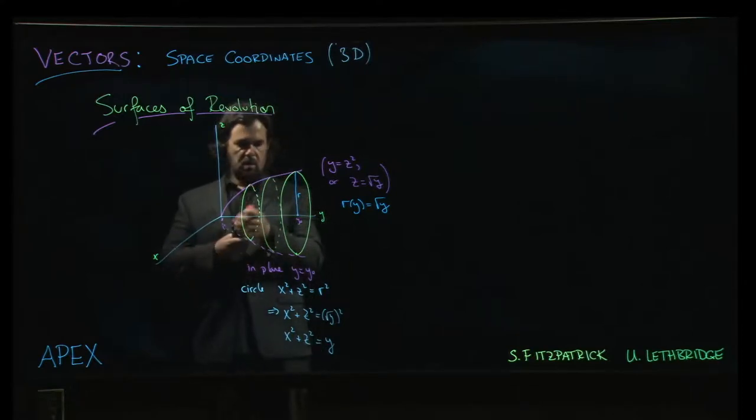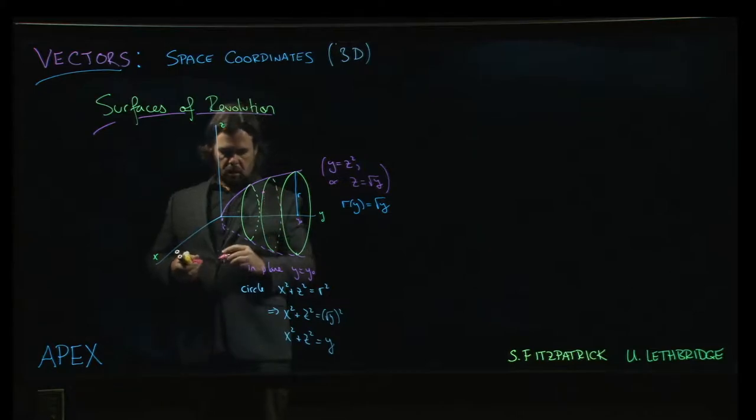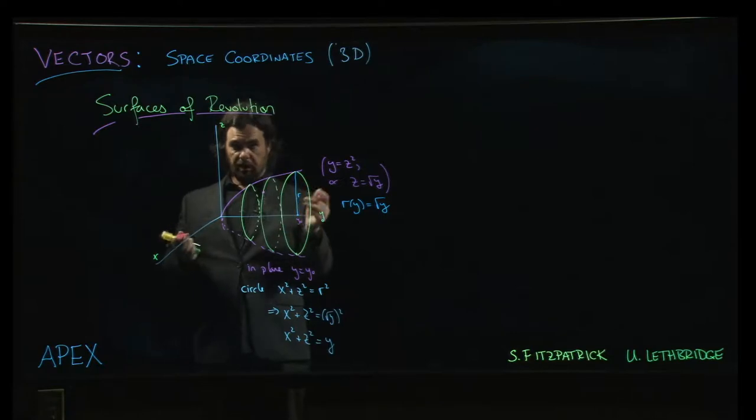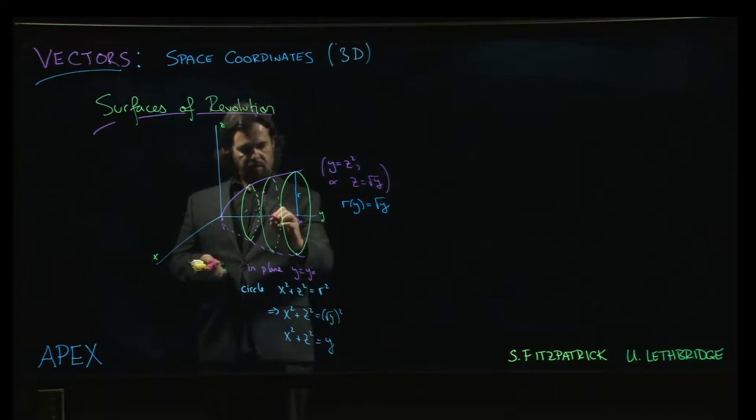And you take a point on that circle. Well, it's going to have your x, y, z coordinates, right? But the radius of that circle at the center is here, right? So the center is going to be at, say, 0, y, 0 for some value of y.